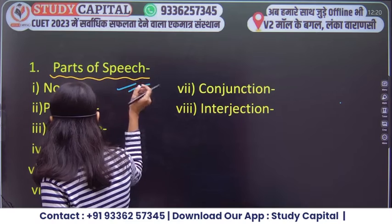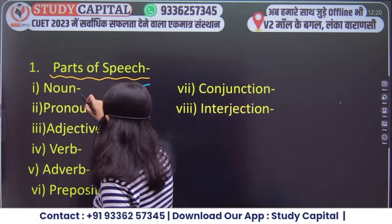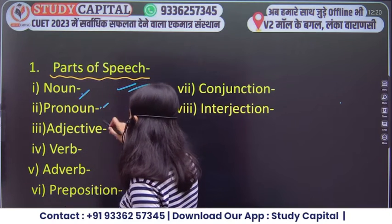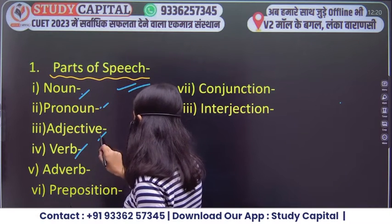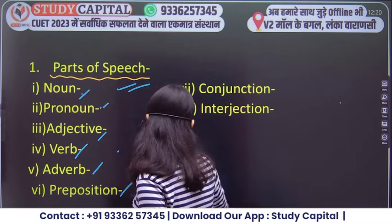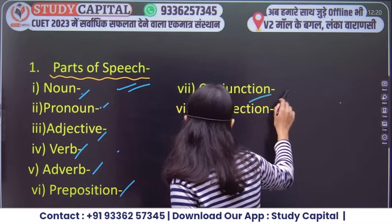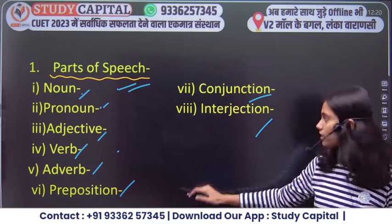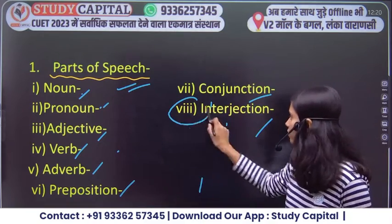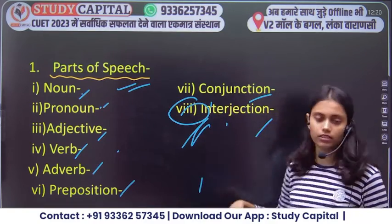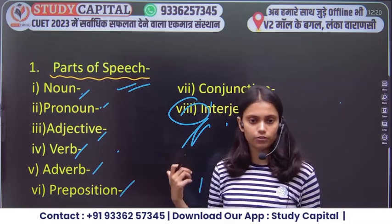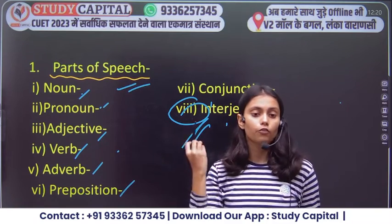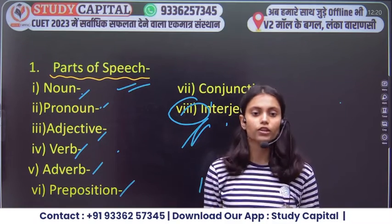Parts of Speech — what are we going to do? Parts of Speech includes the noun, pronoun, adjective, verb, adverb, preposition, conjunction, and interjection. Basically, all eight parts of speech will be included.